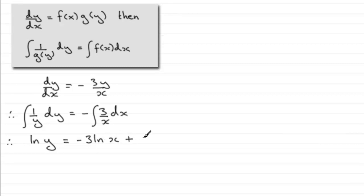There are many ways that we can make y the subject. I'm going to add the 3 natural log of x to both sides. So if we do that, we've got the natural log of y plus 3 times the natural log of x equals that constant of integration c.